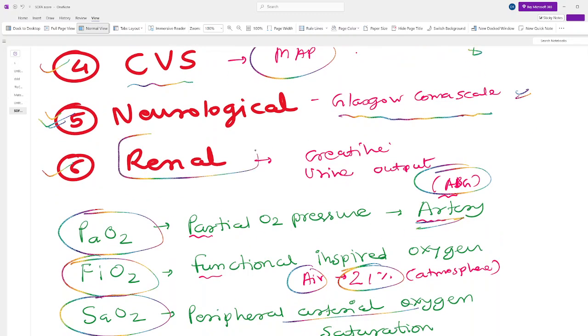For the renal system, we use two things: first of all is creatinine and second is urine output.